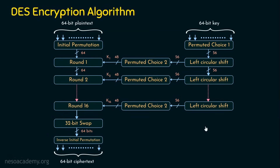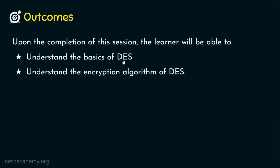Before we conclude, let's see what we are going to cover in the next presentation: first, the initial permutation; then the round function; then the inverse initial permutation; and finally, what happens in every round. I hope you now understood the basics of DES and the encryption algorithm of DES. I will see you in the next presentation. Thank you for watching.